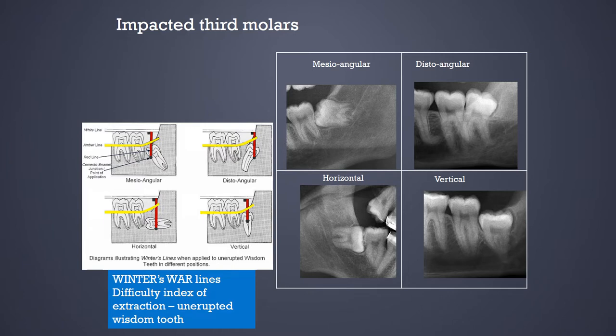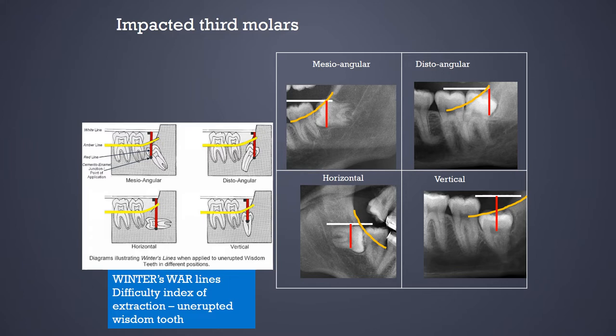For impacted third molars, panoramic radiography is a really important tool. You can see different cropped images from impacted third molar panoramic radiographs showing mesioangular, distoangular, horizontal, and vertical impactions. This is very useful in understanding Winter's lines — the white, amber, and red lines — to assess how difficult the extraction could be.